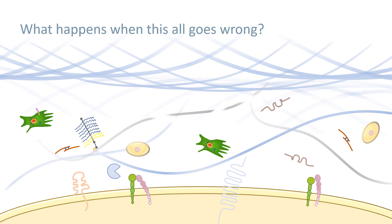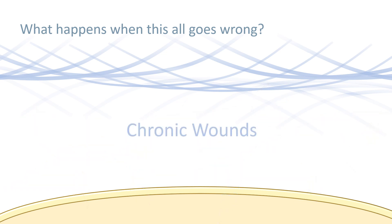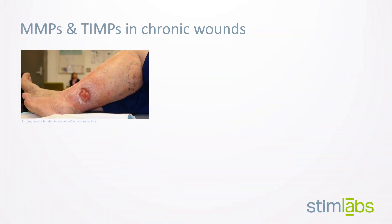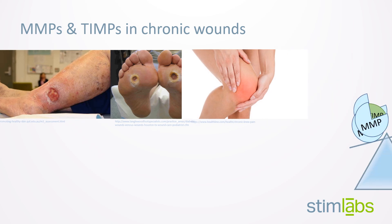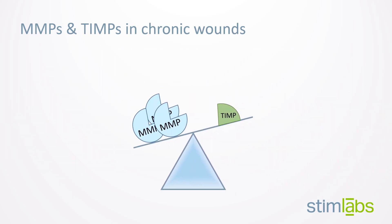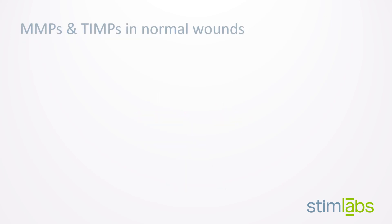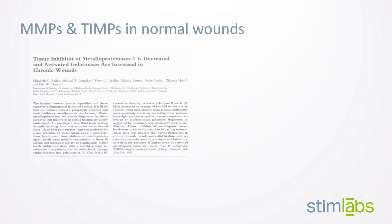When TIMPs don't properly regulate MMPs, there's too much ECM breakdown and not enough new ECM being made. Over time, the ECM weakens and won't provide the structural support that tissue needs. The body cannot create enough new tissue to keep up with what's being broken down by unregulated MMPs. This contributes to chronic injuries. One hallmark of chronic wounds — including venous leg ulcers, diabetic foot ulcers, and many types of inflammatory joint conditions — is an overabundance of MMPs and too few TIMPs.